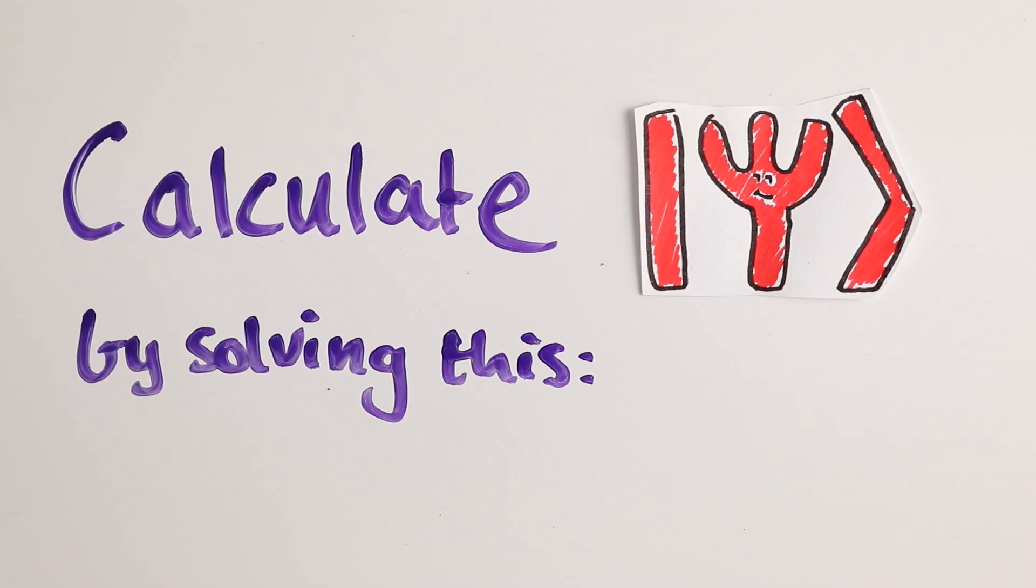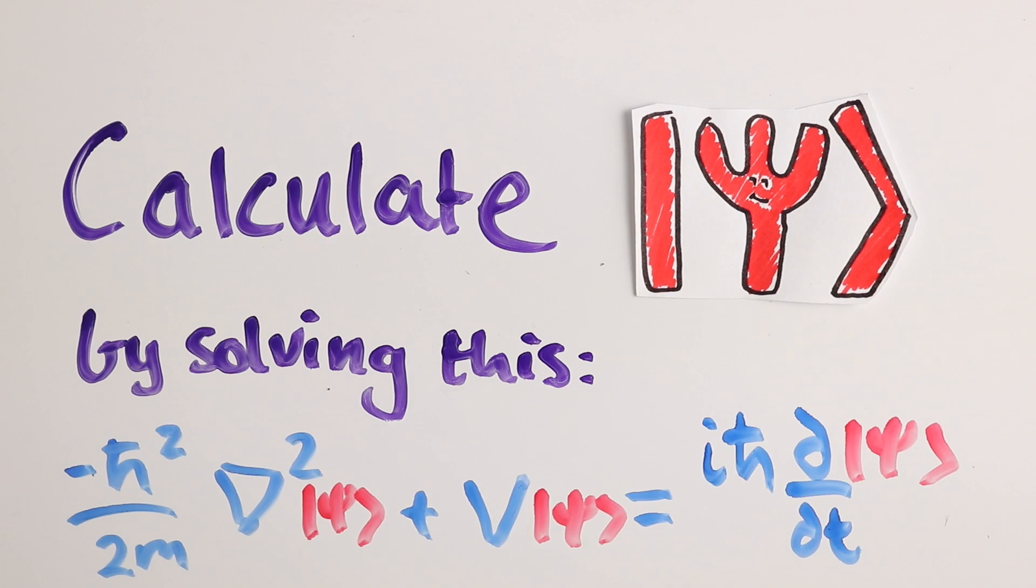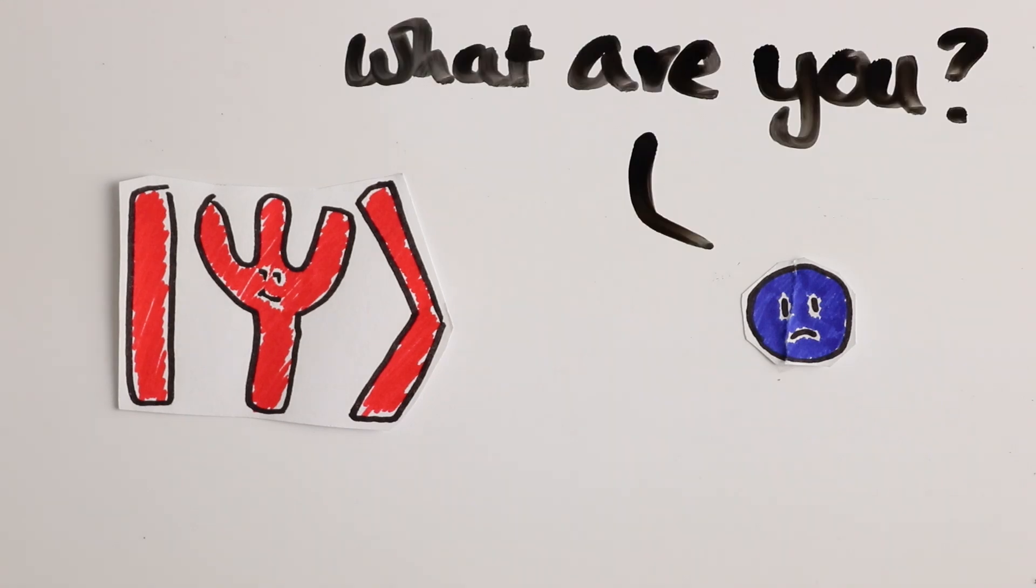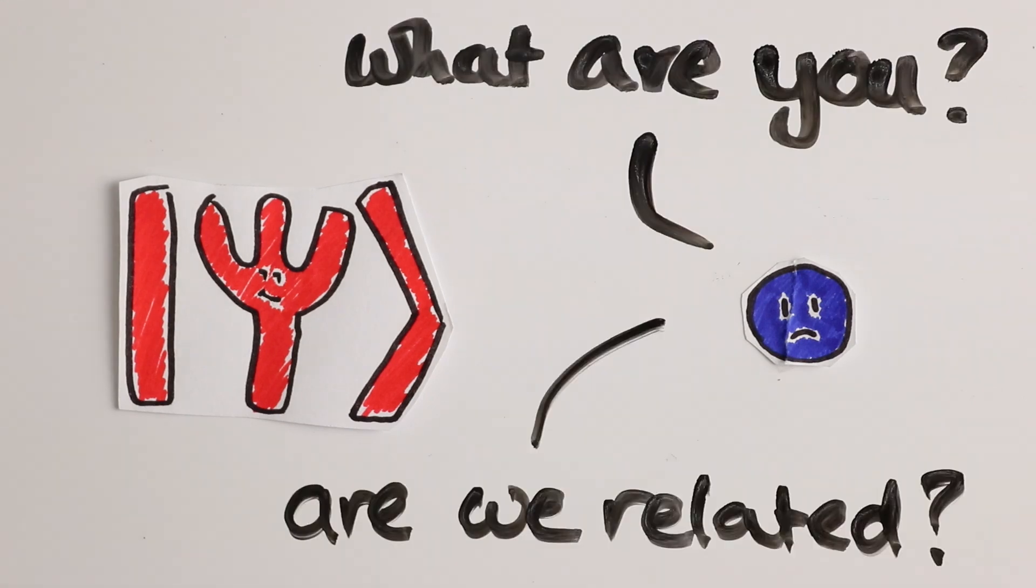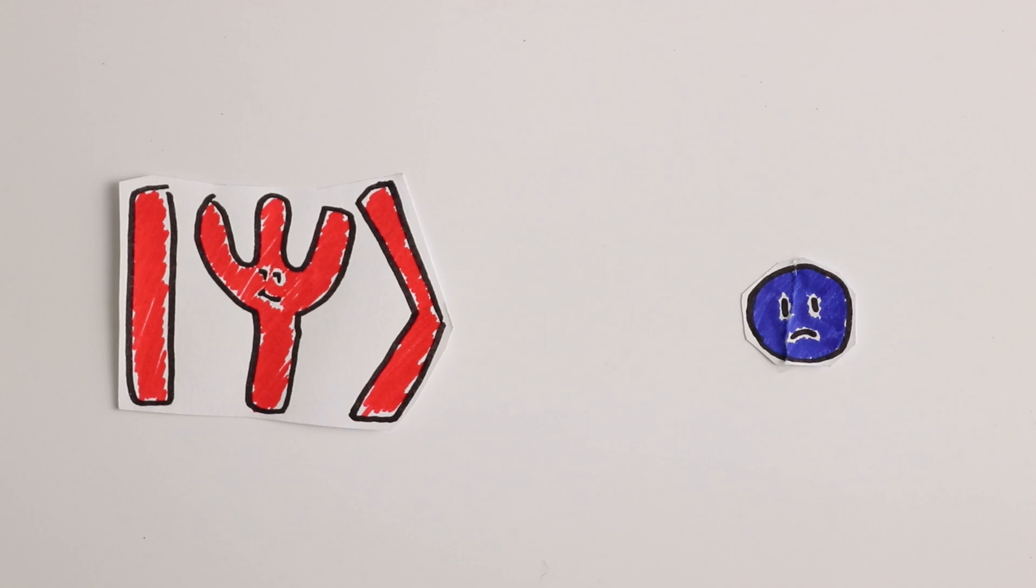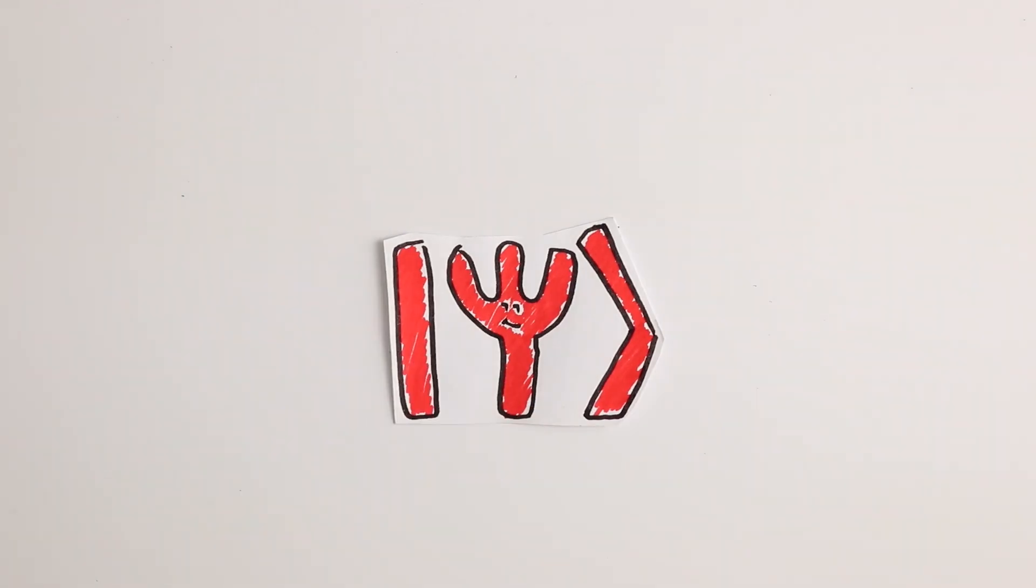If you can calculate what the wave function of an electron is, then you can figure out where the electron is likely to turn up. But what is the wave function, and how is it related to the electron at all? Does the electron just disappear when it's not being measured, and only the wave function exists?